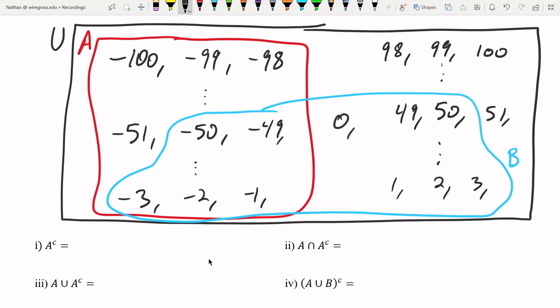And with that, we can find these four expressions here. So A complement, that's what this first part is saying. A complement is just everything that's not in A. It's the opposite of A, always contained within the universe set.